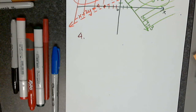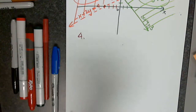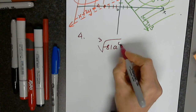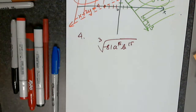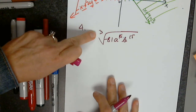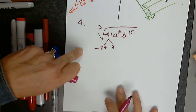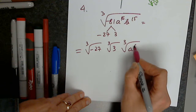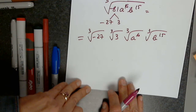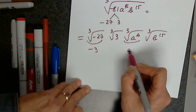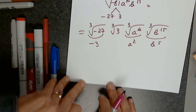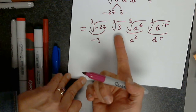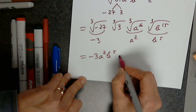Problem 4. Assume that the variables and radicands can be any real number — remember, it should ring a bell: absolute value. So I have the cube root of negative 81 times a to the 6th times b to the 15th. I would not use absolute value here because it's the cube root. This will be negative 27 and 3. So this becomes the cube root of negative 27, the cube root of 3, the cube root of a to the 6th, and the cube root of b to the 15th. So this is negative 3, this is a squared, this is b to the 5th — I put them in front and leave the cube root of 3 alone: negative 3, a squared, b to the 5th, times the cube root of 3.